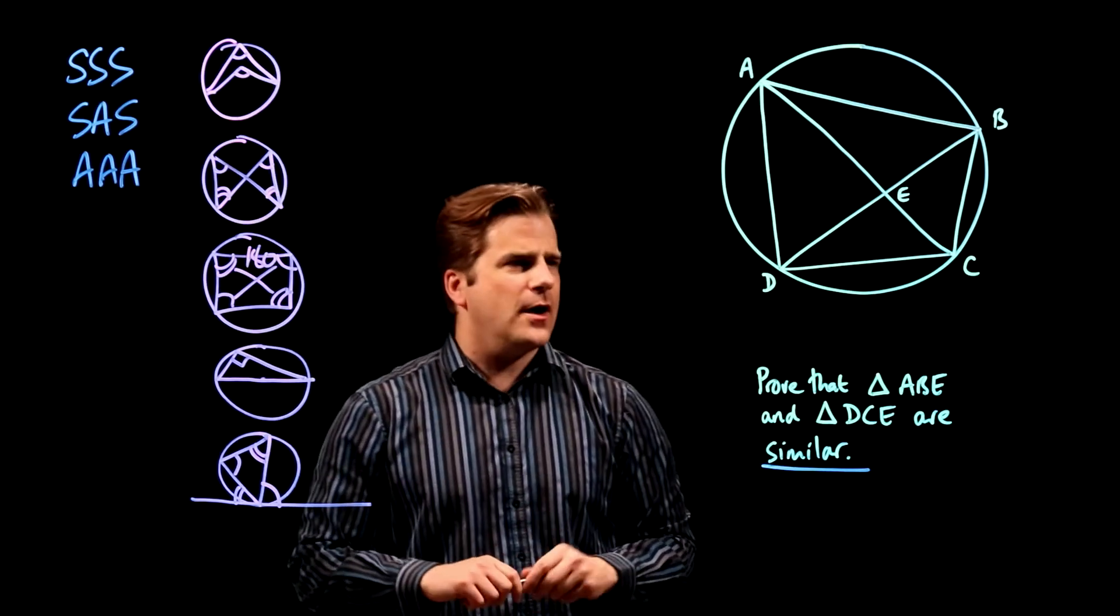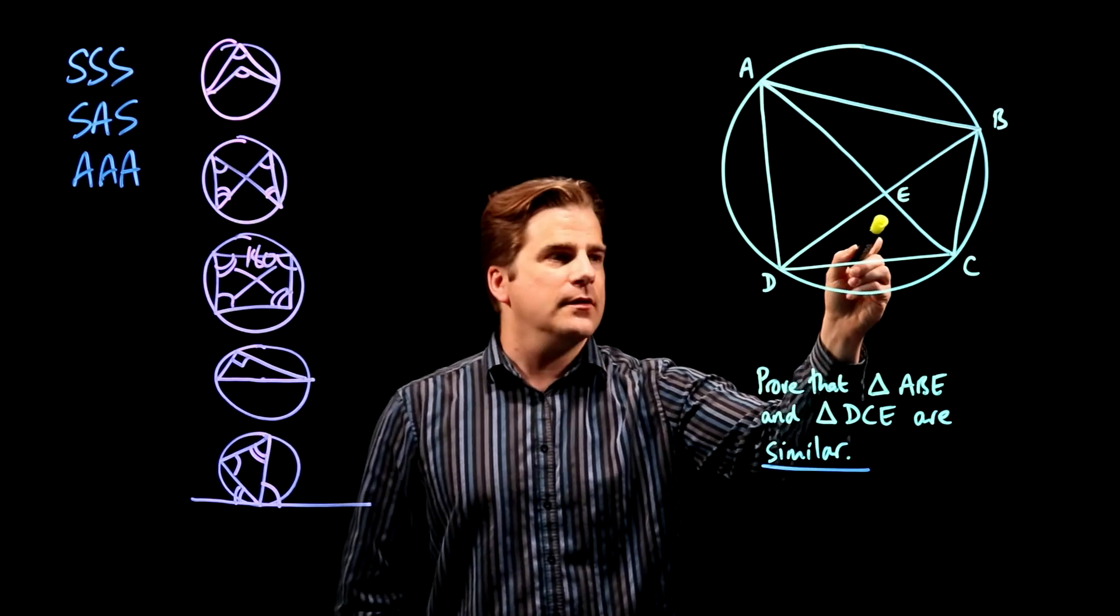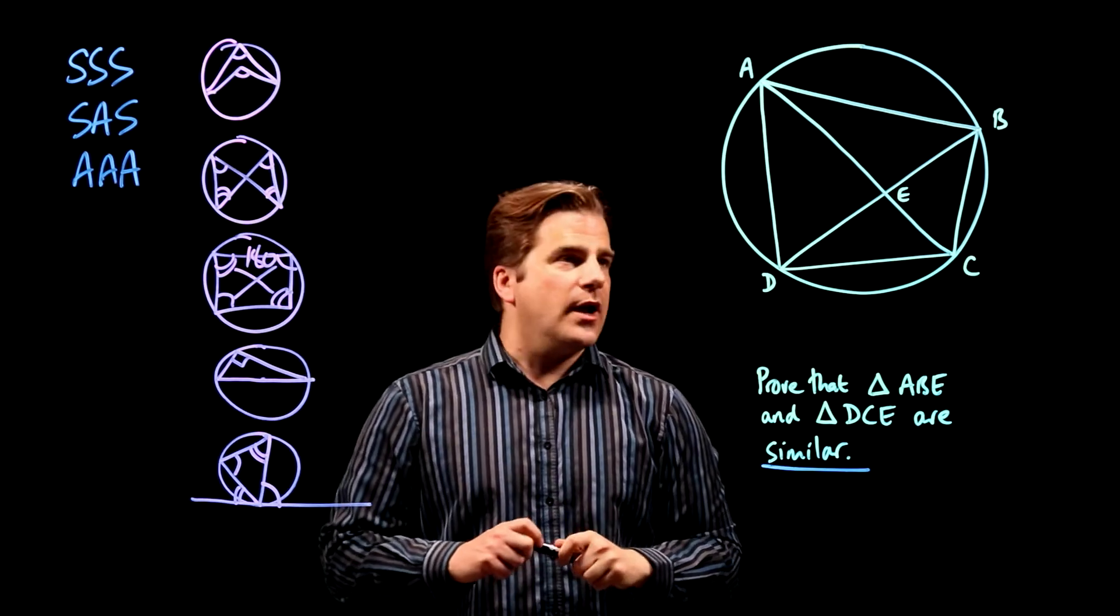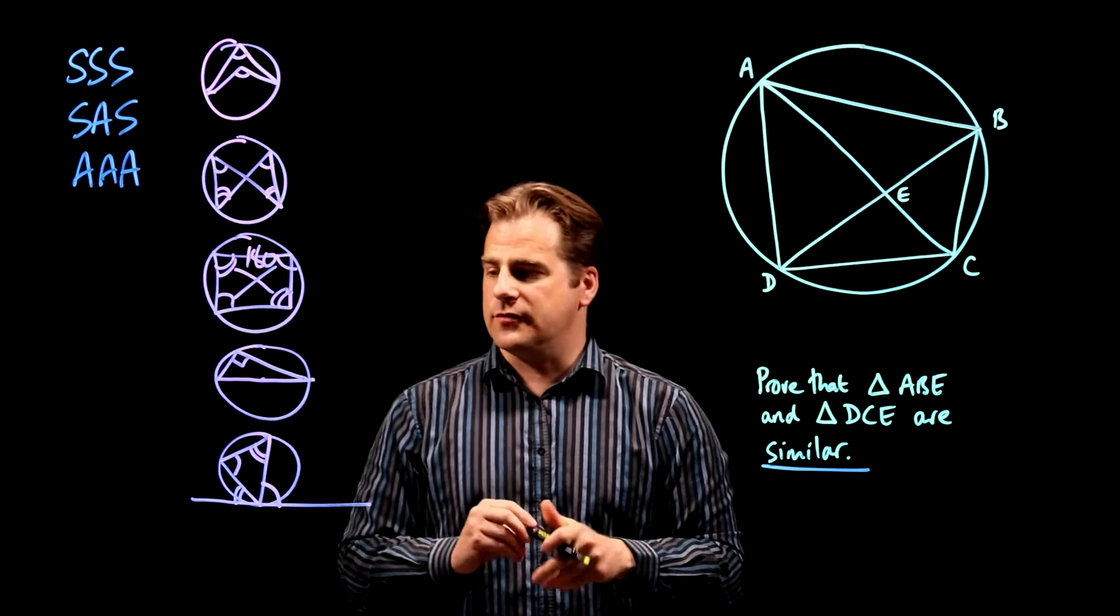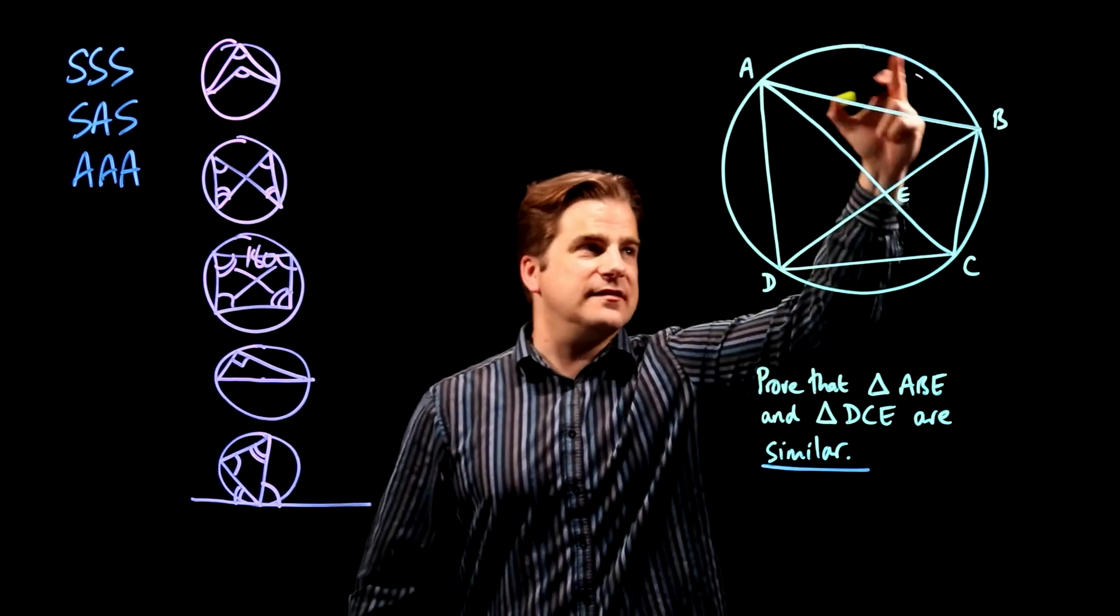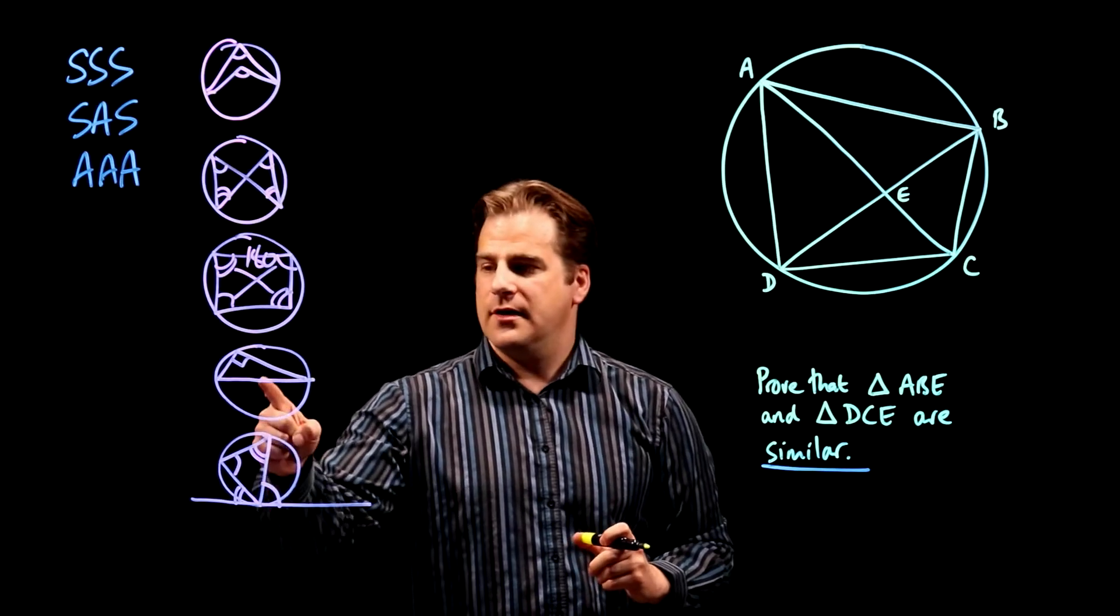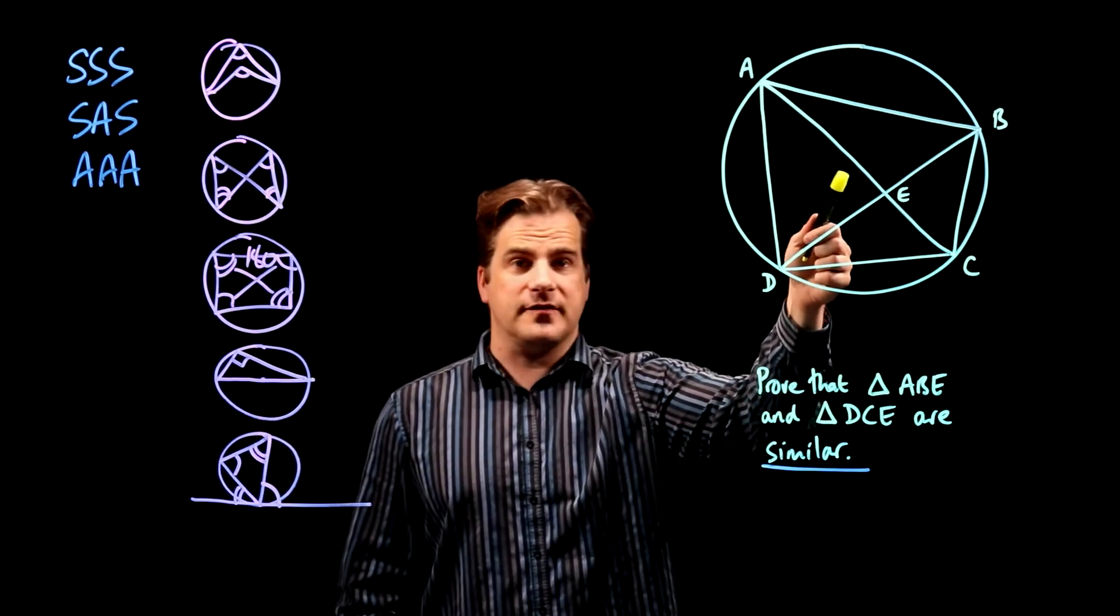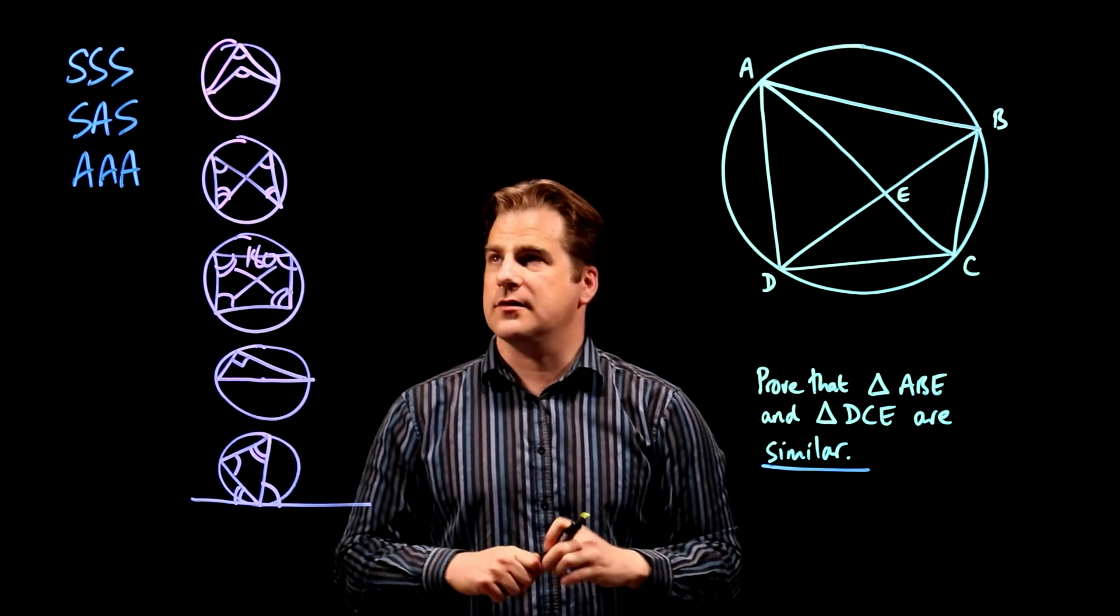OK, so what's going to be useful here? Well, we've got to prove that these two are similar. Let's look at the circle theorems. Which ones do you think are going to be useful? There's no tangent here, so probably not the alternate segment theorem. We don't know where the center of the circle is, there's no diameter, so probably not the semicircle.